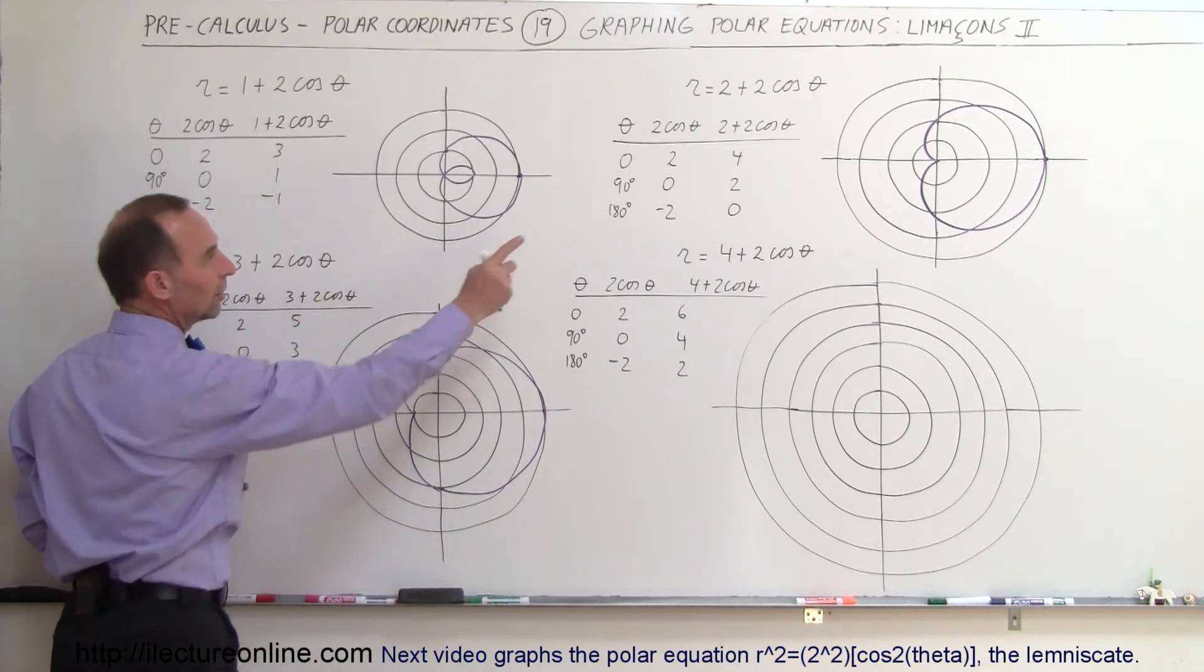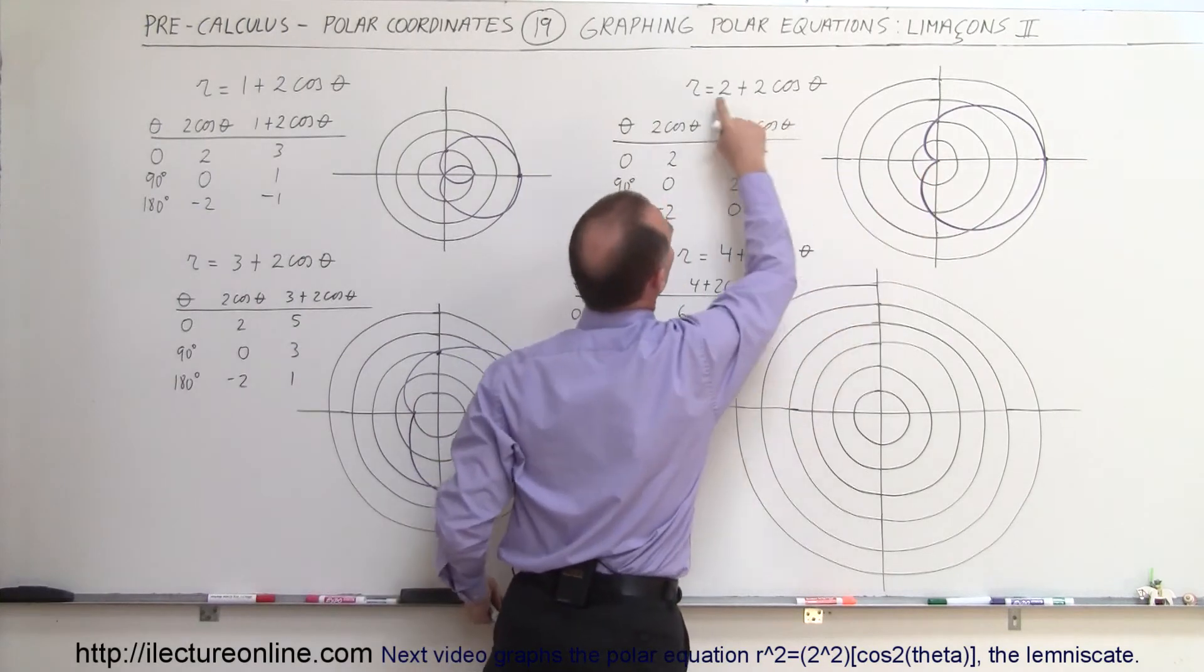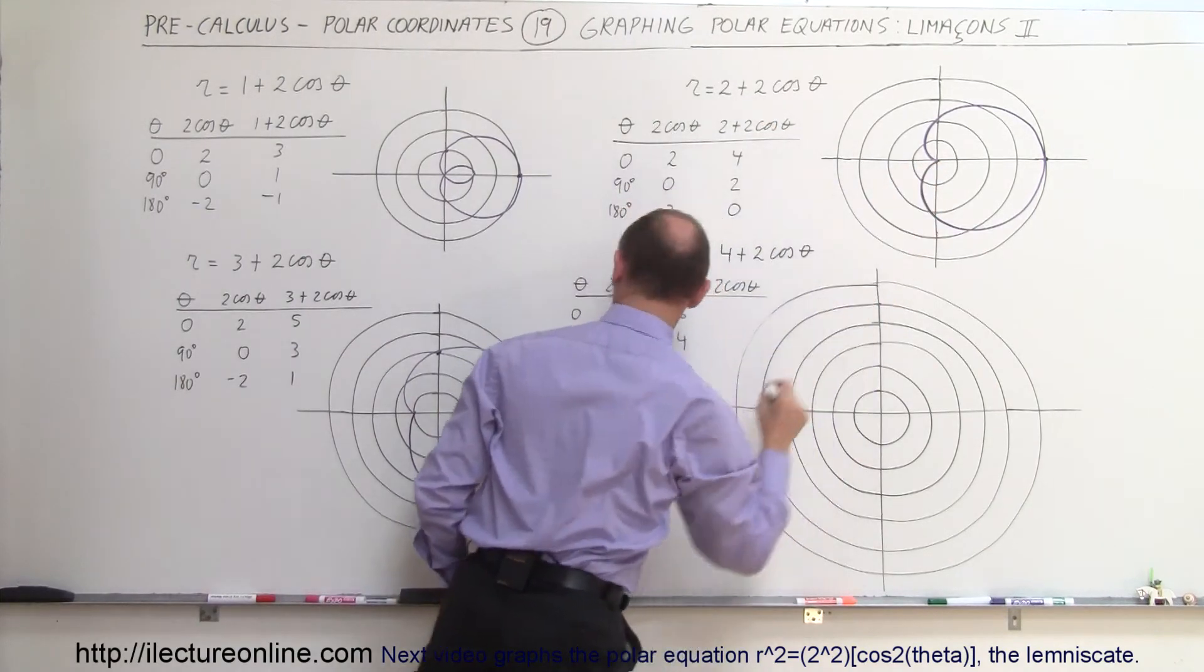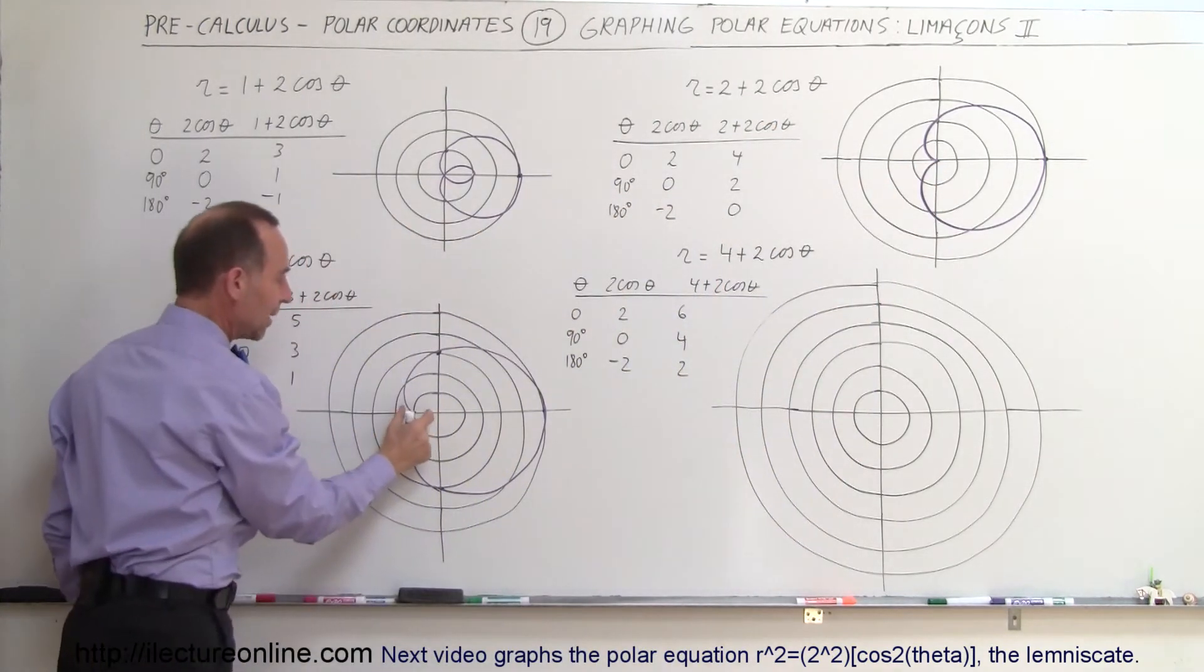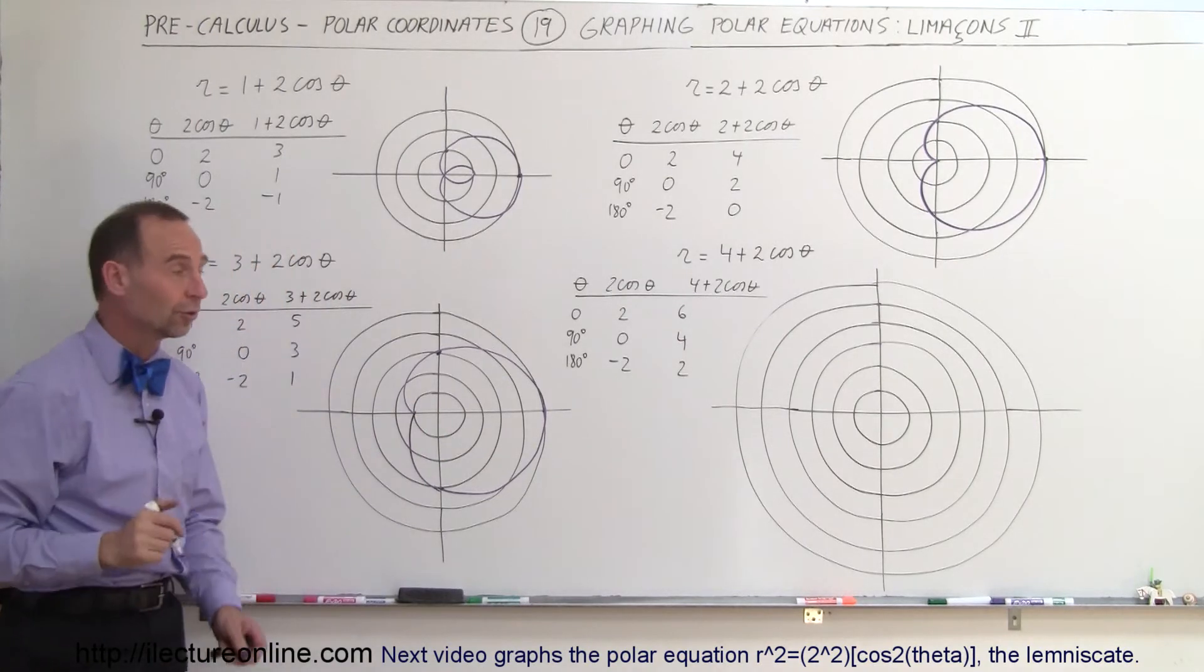So notice there's a little indentation, not all the way down to the origin. If the two numbers are the same you get back to the origin, but if it's not the same, you make a little dimple but doesn't come all the way back to the origin. And finally,